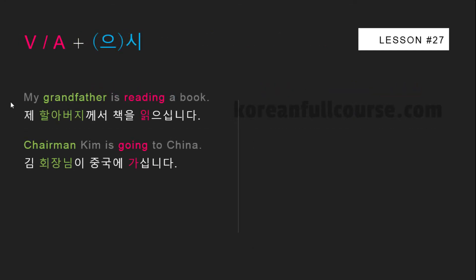Let's take a look at a few examples. My grandfather is reading a book: 제 할아버지께서 책을 읽으십니다. If you don't remember, 께서 is a polite version of the nominative case particles 이/가. So instead of simply saying 읽습니다, we need to say 읽으십니다, because grandfather is much older and we need to show him respect.